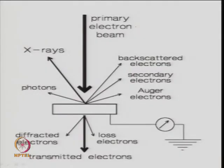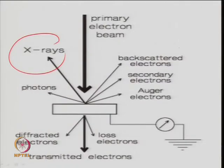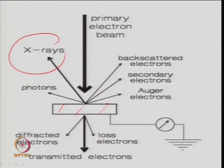The primary electron beam strikes the solid substrate (catalyst). What you measure includes X-ray photons, Auger electrons, back-scattered electrons, secondary electrons, diffracted electrons, and transmitted electrons. For electron microscopy, we focus on the transmitted electron or the back-scattered electron — whether the material is hard or soft, or has pores, determines whether the beam transmits easily or diffracts. This forms the basis of scanning electron microscopy (SEM) and transmission electron microscopy (TEM).